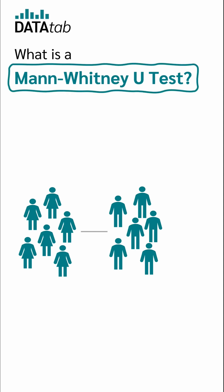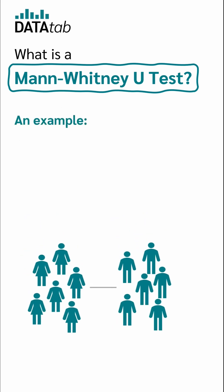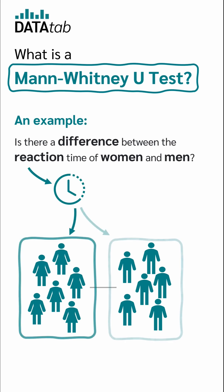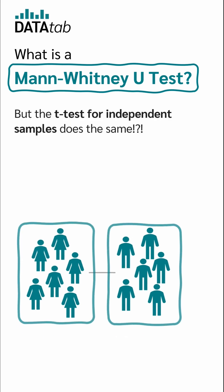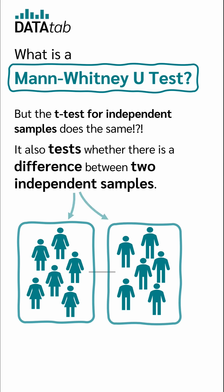What is a Mann-Whitney U test? A Mann-Whitney U test tests whether there is a difference between two independent samples. For example, is there a difference between the reaction time of women and men? The t-test for independent samples does the same — it also tests whether there is a difference between two independent samples.